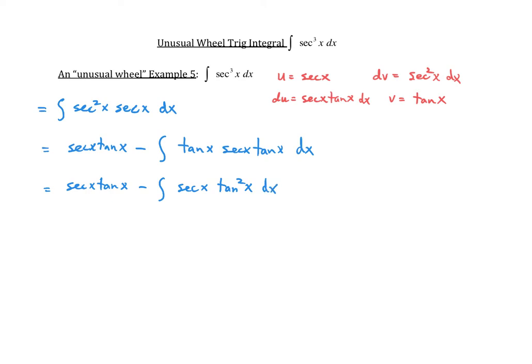The next thing I'm going to do is use a Pythagorean trig identity — I'm going to use the one where we isolate tangent squared x. We know that tangent squared x equals secant squared x minus one, so I'm going to make that substitution.